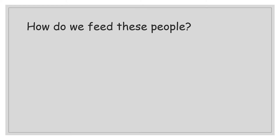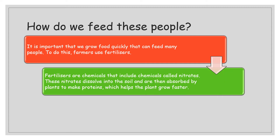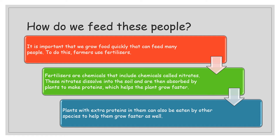Alternatively, we could try to grow more crops within the fields we already have. That means farmers need to use fertilizers — chemicals that include things like nitrates. Nitrates are really important; you'll come across this in the nitrogen cycle in S3 Biology. Nitrates dissolve in the soil, are absorbed by plants, and help them make proteins, which helps them grow faster. Those extra proteins are then eaten by other organisms, including us and cattle.